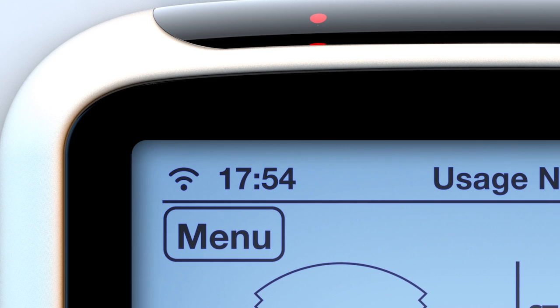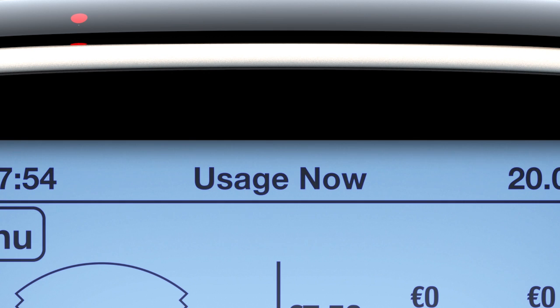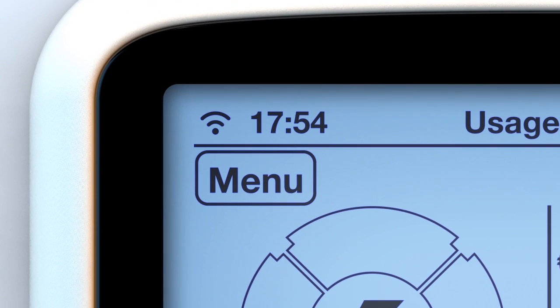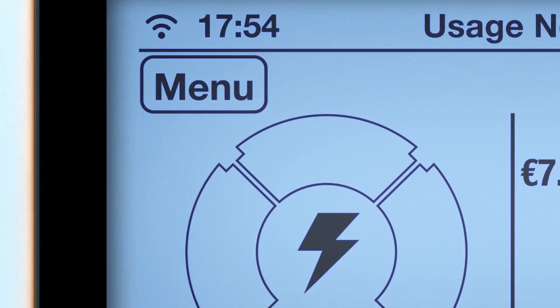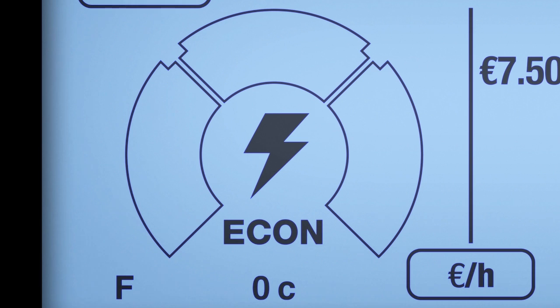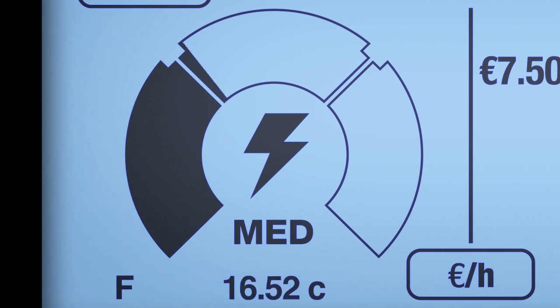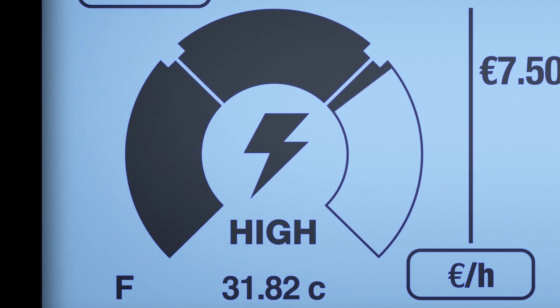The network icon shows the connection status to your network. You can also see the current time, the date, the display title, and the menu button. The fuel icon represents electricity, while the rate of consumption indicator shows your consumption in one of three ways: as economy, medium, or high.